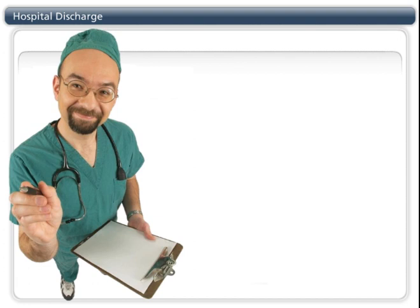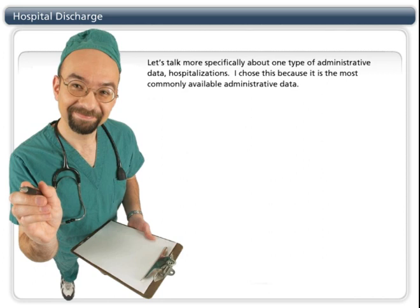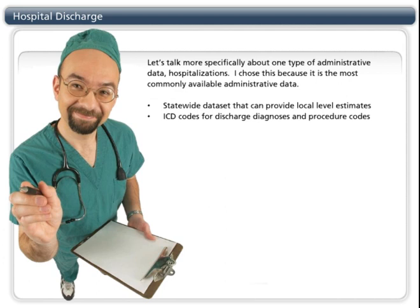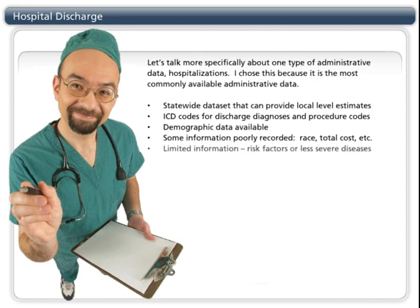Statewide hospitalization datasets can be used to provide local-level estimates of hospitalization frequency based on ICD coding. The denominator for hospitalization rates is available from Census or the American Community Survey. Some limitations, however, are that some information is poorly recorded, like cost or race. Hospitalizations are severe events, and therefore using this data will not reflect less severe diseases, making it inappropriate to estimate the prevalence of a disease outcome. Finally, the data is event-based, not person-based, in most cases. This means the data tells you the number of hospitalizations, but not the number of people hospitalized, and people can be hospitalized more than once in the dataset.